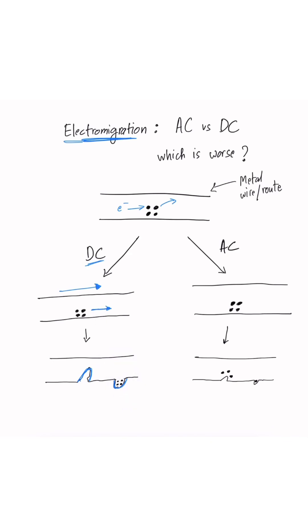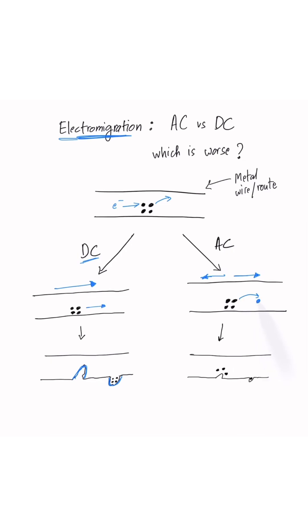But in case of AC current, electrons sometimes flow in one direction and sometimes in the other direction, which creates a cancelling effect. For example, an atom which got displaced